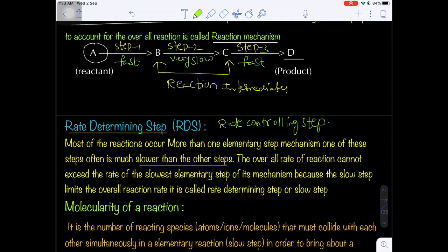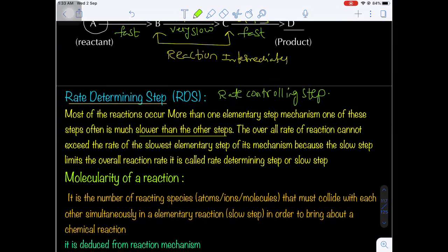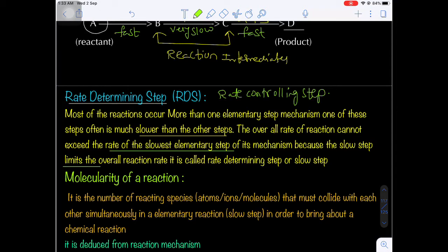The overall rate of the reaction cannot exceed the rate of the slowest step. This is very important. The slowest step controls and limits the rate of the overall reaction. That is why it is also known as the rate determining step, slowest step, or rate controlling step.